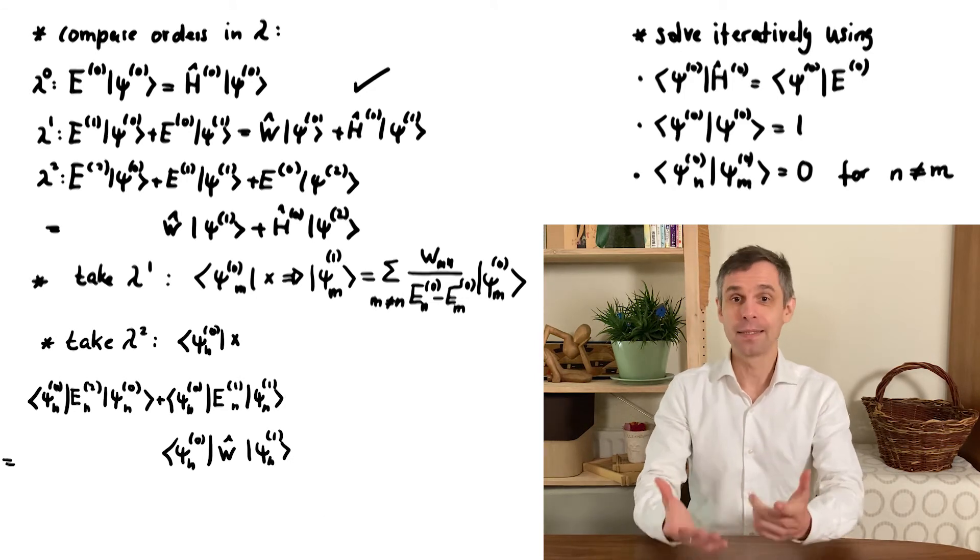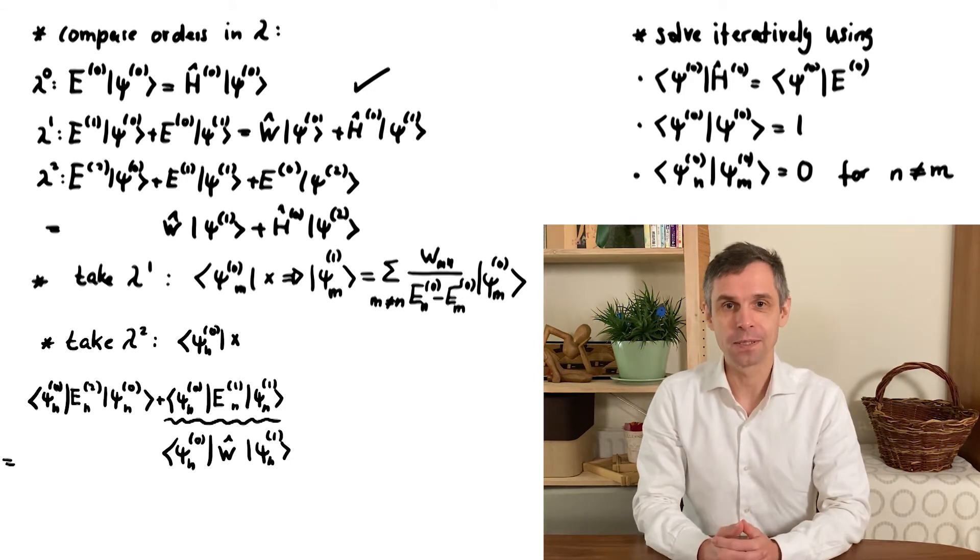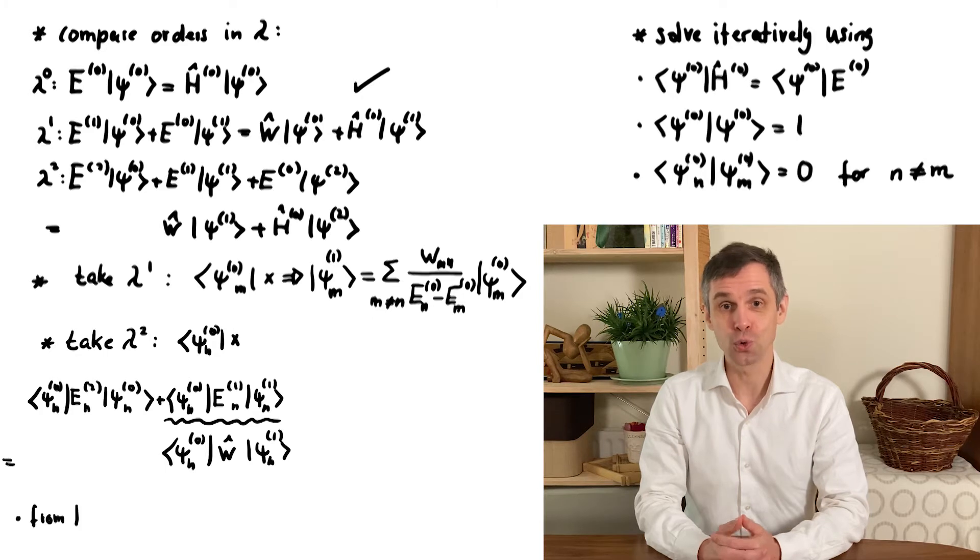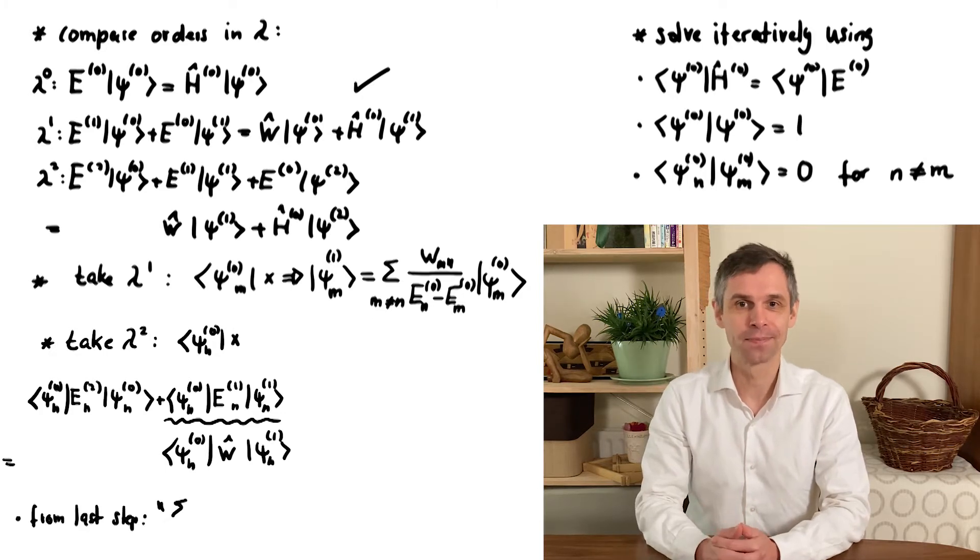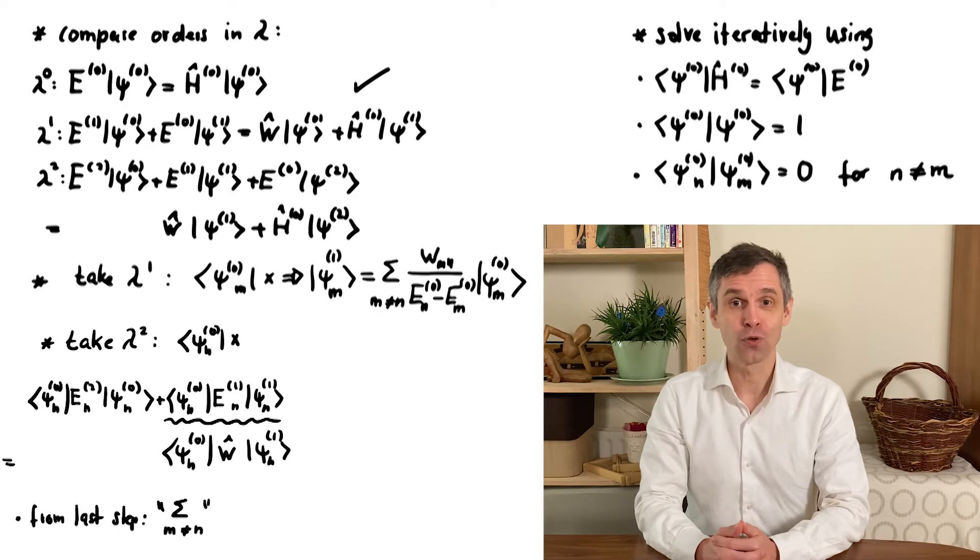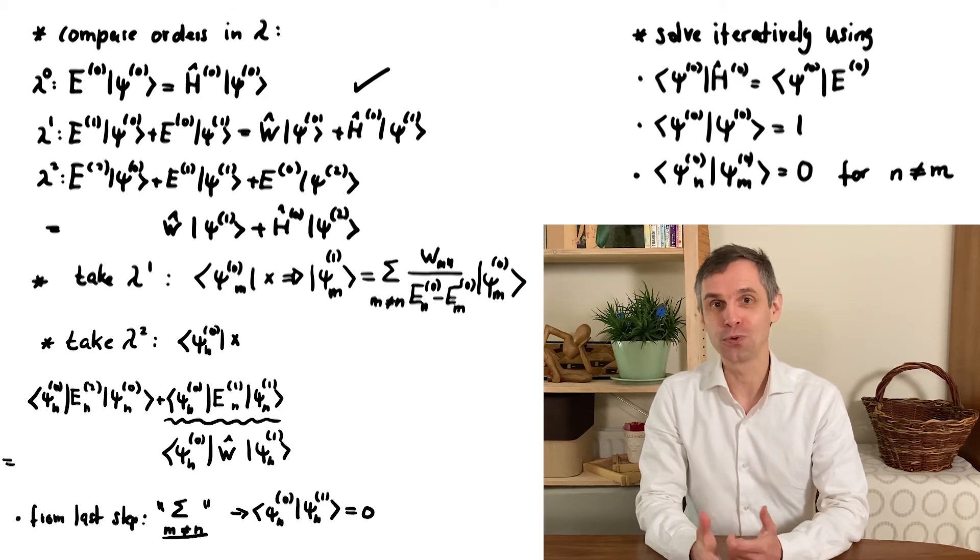Now looking at the underlined term, recall that we just mentioned that the first-order correction to the state does not contain the unperturbed state, so its expansion coefficient vanishes. But this is just what we have in this term given that En1 is just a constant that we can pull out to the front.